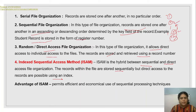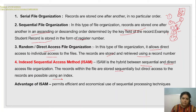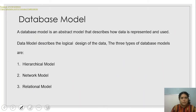In direct access or random file organization, you can directly access records — you can store and retrieve them using the record number. In ISAM, records are stored sequentially but direct access is possible using an index, just like an index in a textbook. The advantage of ISAM is that it permits efficient and economical use of sequential processing techniques.